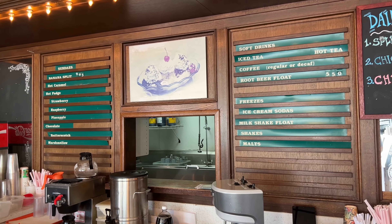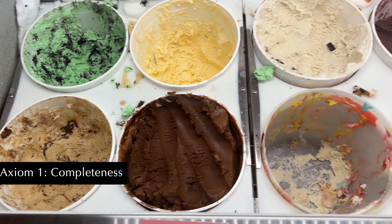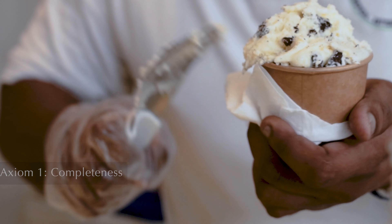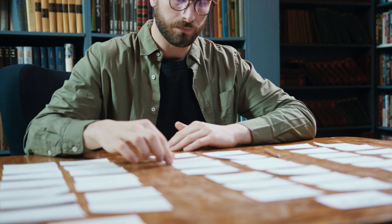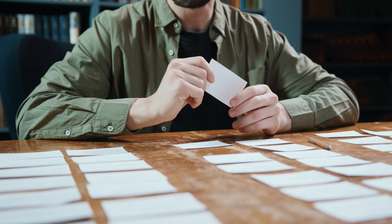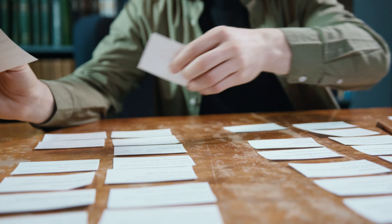Picture yourself in an ice cream parlor faced with a multitude of flavors. Completeness, our first axiom, postulates that you can systematically rank these flavors based on your preferences. It means you can confidently state whether you prefer chocolate over vanilla, vanilla over strawberry, or perhaps find them all equally tempting. This capacity to order your preferences is the bedrock of rational choice, ensuring that you can consistently make choices that align with your desires.